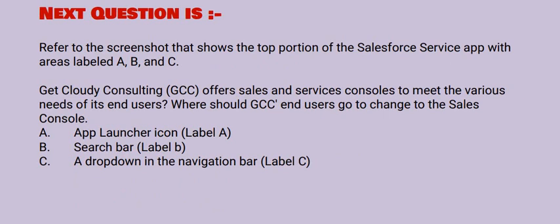Next question: refer to the screenshot that shows the top portion of the Salesforce Service App with the areas labeled A, B, C. Get Cloudy Consulting offers sales and service consoles to meet the various needs of its end users. Where should GCC end users go to change to the sales console? Option A: App Launcher icon, label A. Option B: search bar, label B. Option C: a drop-down in the navigation bar, label C. The correct option is option A.